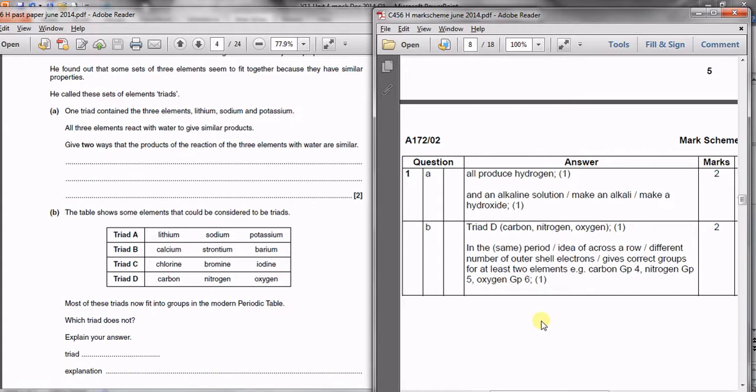You could say that they're in different groups but to be able to get the mark you had to specify at least two of those groups. Just saying they're all in different groups wasn't enough to get you the mark. You had to specify which groups they were in.